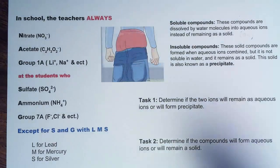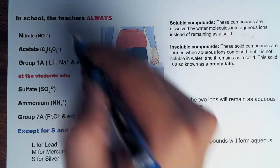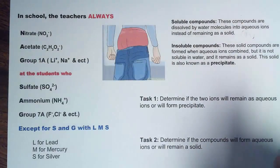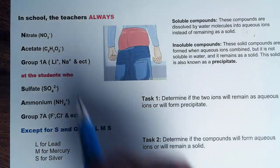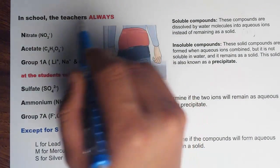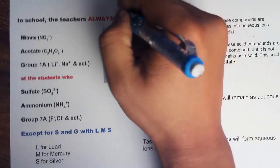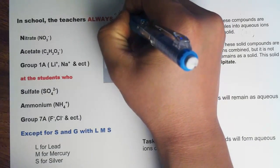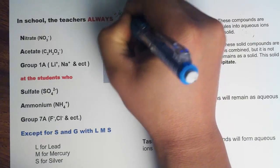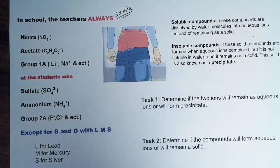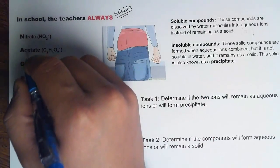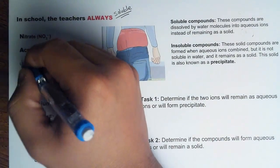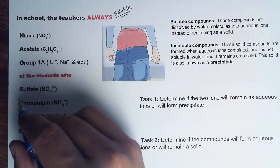In a school environment, the teacher always notices and nags about a student who has saggy pants. We simplify this into: 'In school, the teacher always nags at the students who sag.' Here, 'nag' refers to always soluble. So the rules only apply to always soluble with a few exceptions. The teacher always nags, therefore it's always soluble.